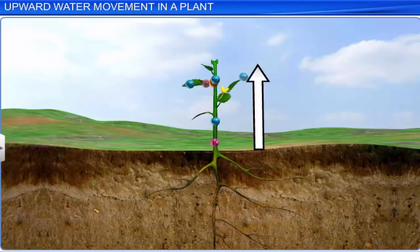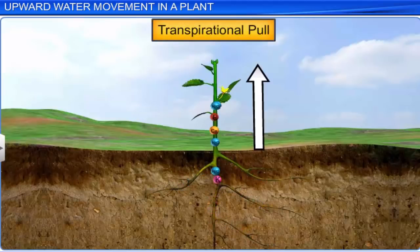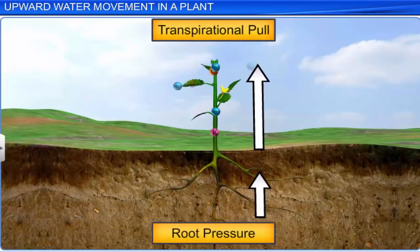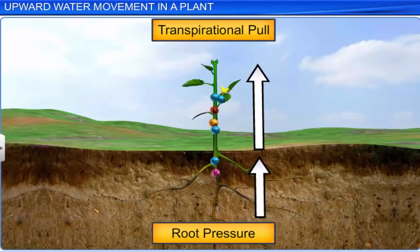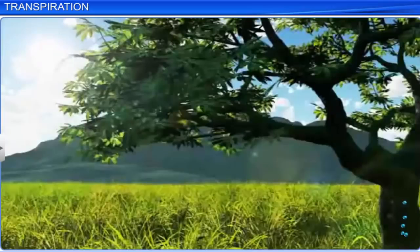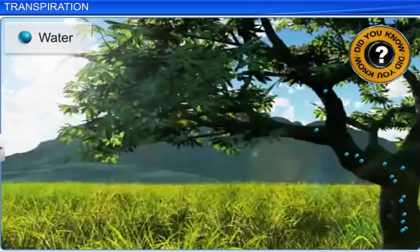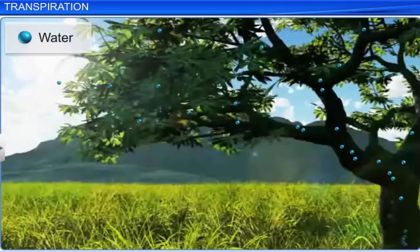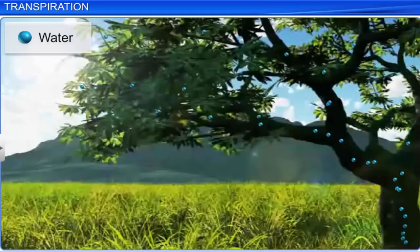Therefore, we can conclude that together, transpirational pull and root pressure are responsible for the upward movement of water in plants. Did you know that a fully grown tree may lose thousands of liters of water through its leaves on a hot dry day through transpiration?